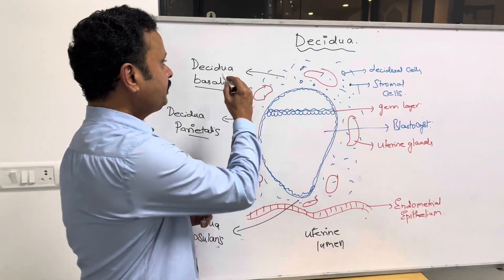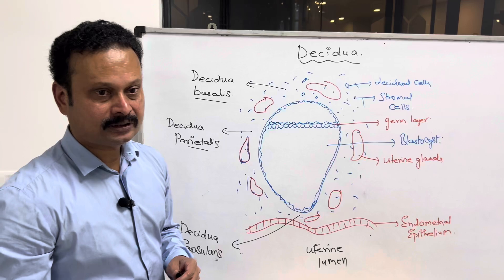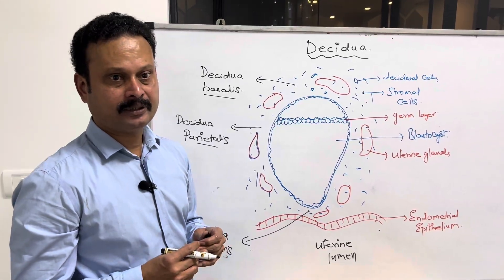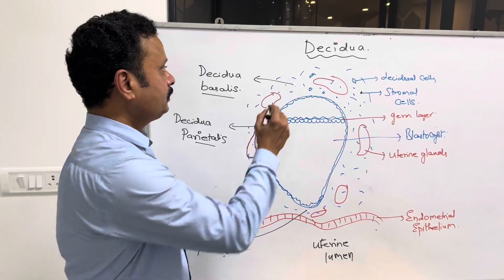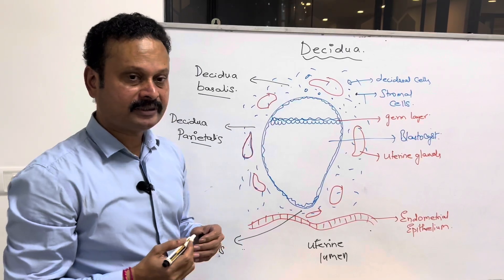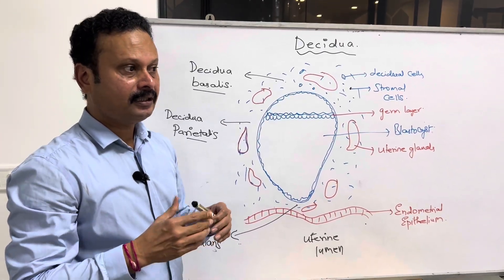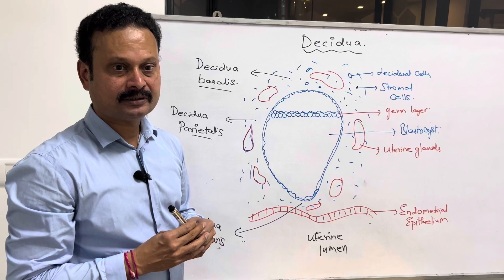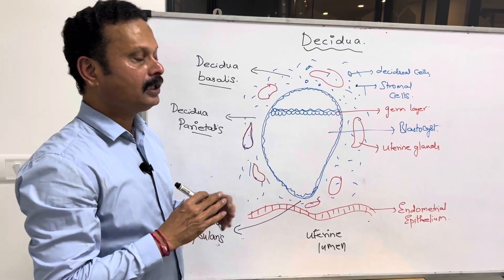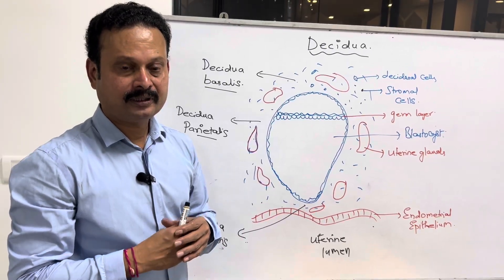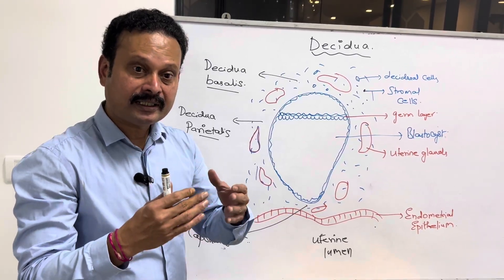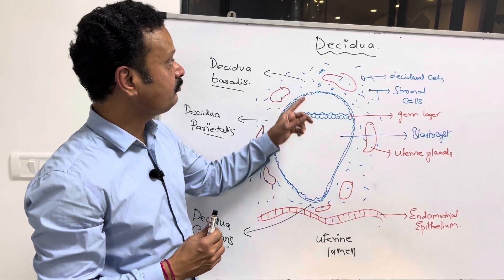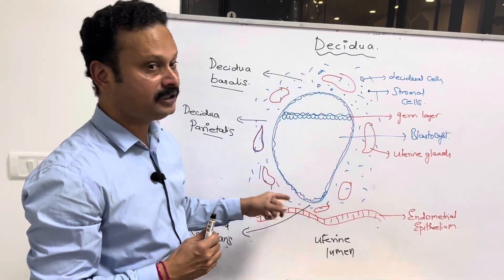It is named decidua because finally, at the end of the pregnancy, this portion of the decidua basalis along with the placenta and its membranes are shed off like deciduous trees — hence the name decidua.